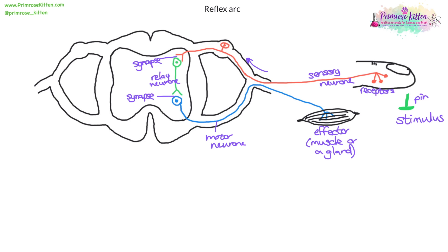In this case it's going to be the bicep, because you're going to pull your finger away from the pin quite quickly. Now you'd need to be able to put this into a flow chart.